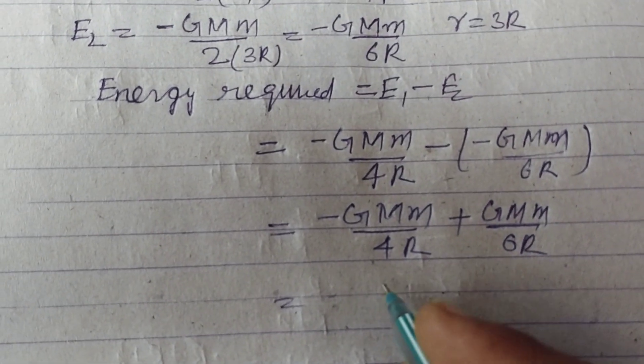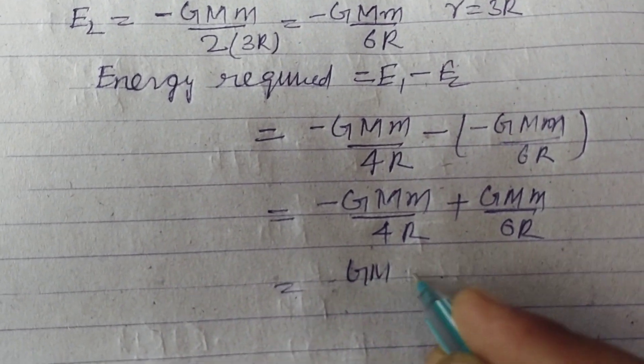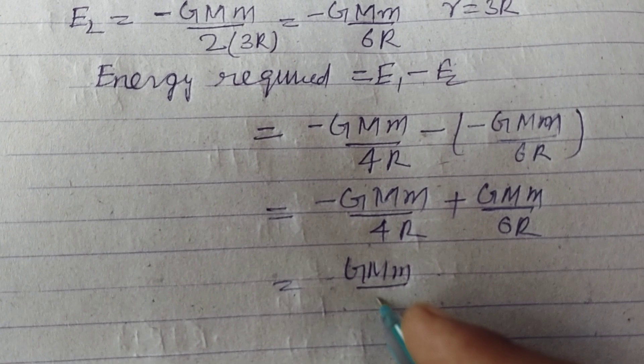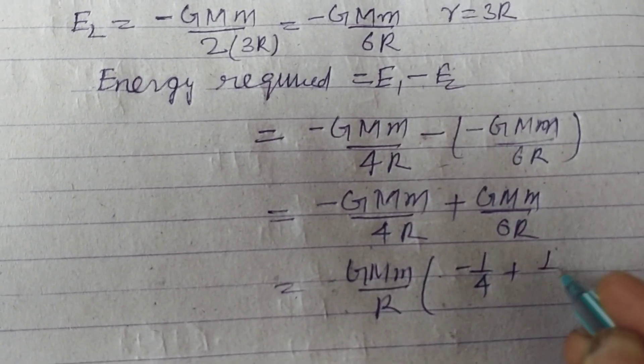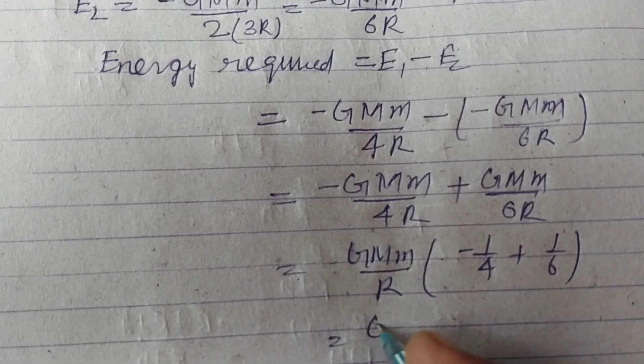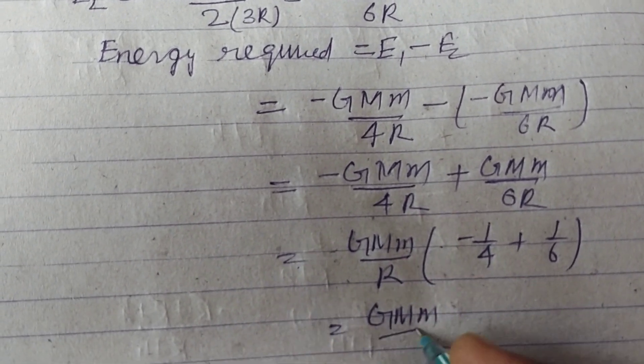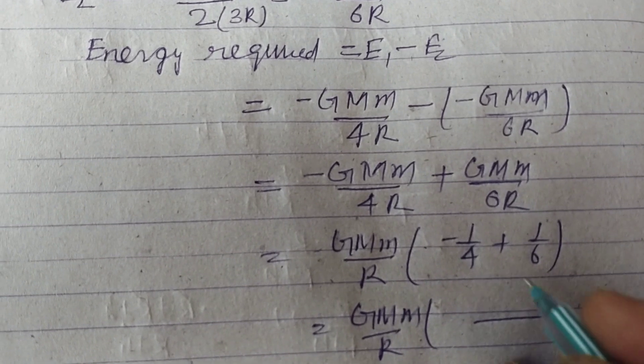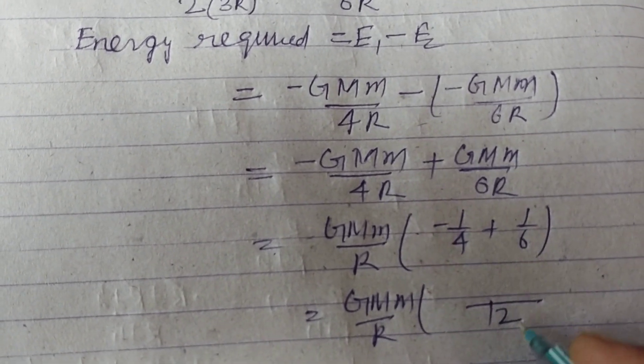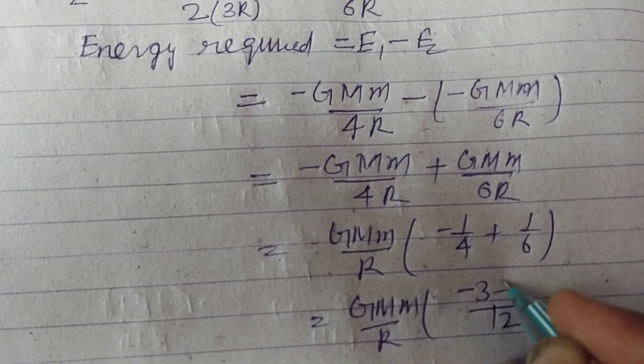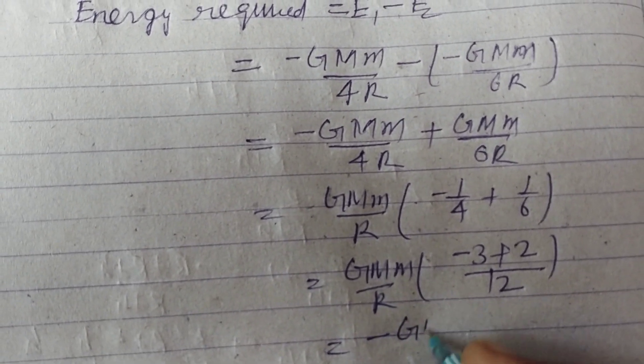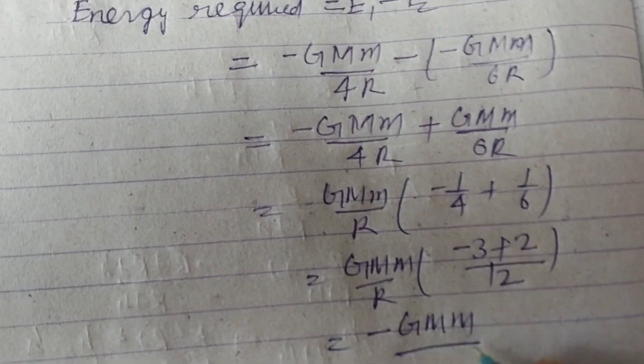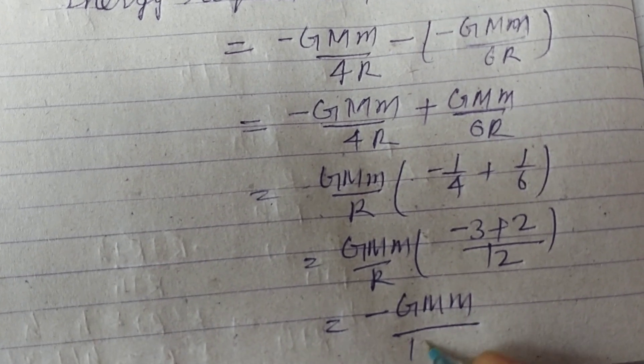So we take common GMm upon R, this will be 1 by 6 minus 1 by 4. So GMm upon R, here LCM is 12. So minus GMm upon 12R.